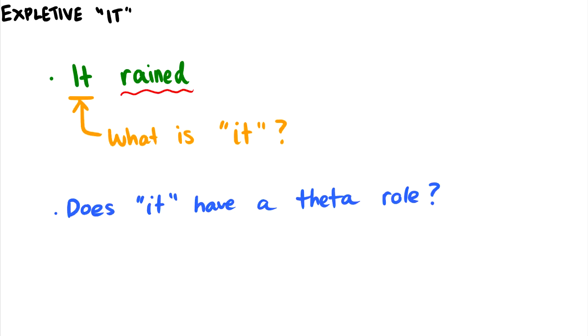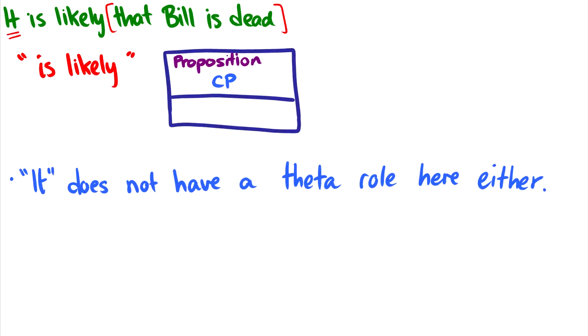Similarly, in this first example, there's no theta role that it receives. That is why this is called the expletive it. We stick it into the subject when there is no theta role for anything there. We just shove it in there. It doesn't refer to anything. It's just it.